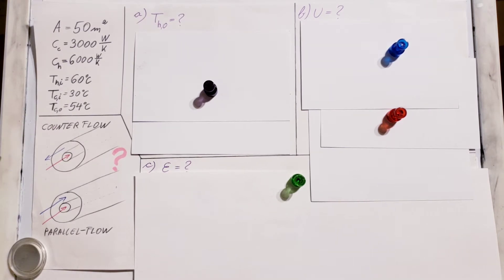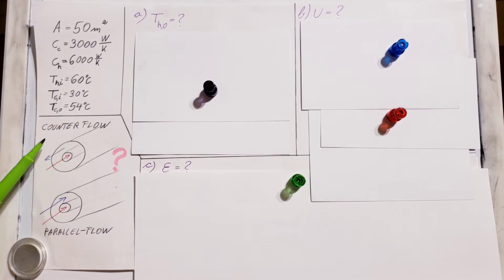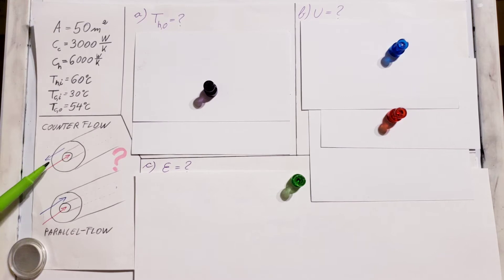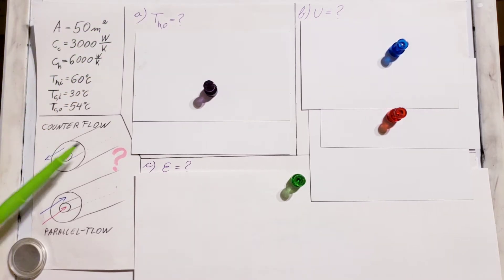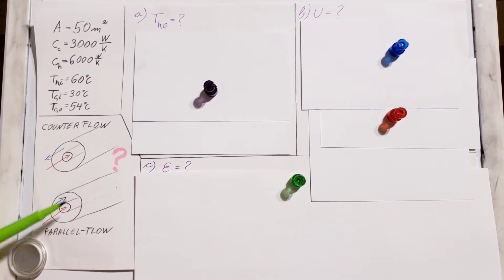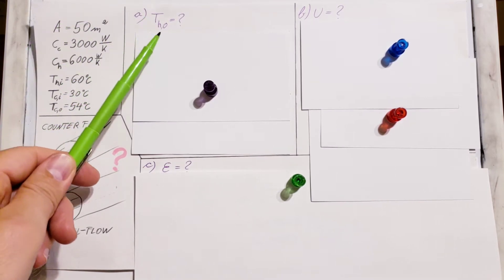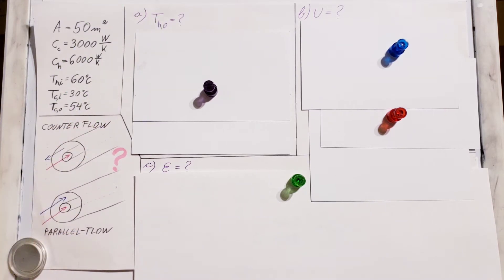Here is a sketch: there is a tube with a larger diameter with a tube of smaller diameter that goes inside it. Right now we only have three of our temperatures — the fourth one we need to calculate. As of right now, we are unable to figure out whether it is counter flow or parallel flow, so we are going to have to calculate the missing temperature first.